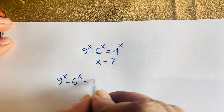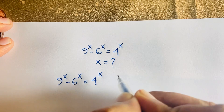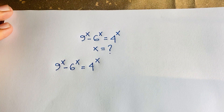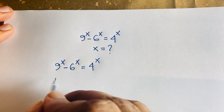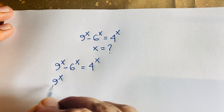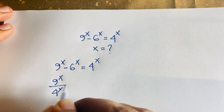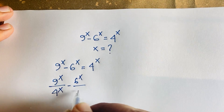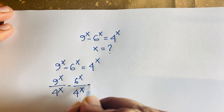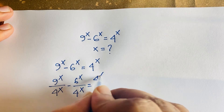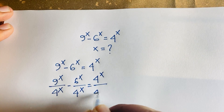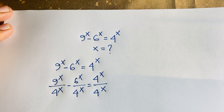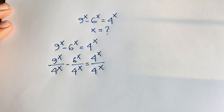Our question is 9^x minus 6^x equals 4^x. Now I divide both sides by 4^x, so it becomes: 9^x over 4^x minus 6^x over 4^x equals 4^x over 4^x.